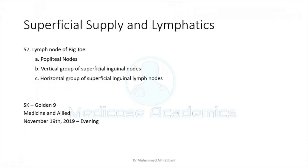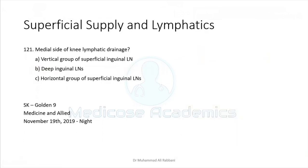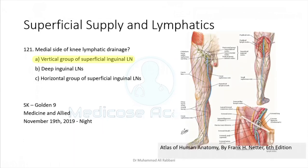For lymphatics, you should know at least the lymphatics of the thumb, little finger, big toe, and little toe, and their dermatomes. Lymph from the big toe travels with the great saphenous vein to the vertical group of superficial inguinal nodes. From the little toe, it travels with the small saphenous vein to the popliteal nodes. The medial side of the knee with the great saphenous vein drains ultimately into the vertical group of inguinal nodes.